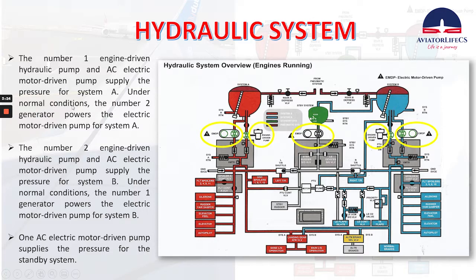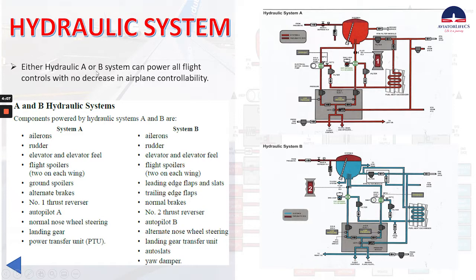Under normal conditions, the number two generator powers the electric motor driven pump for system A. The number two engine driven hydraulic pump and AC electric motor driven pump supply the pressure for system B. Under normal conditions, the number one generator powers the electric motor driven pump for system B. There is one AC electric motor driven pump that supplies pressure for the standby system. Either hydraulic A or B system can power all flight controls with no decrease in airplane control ability.